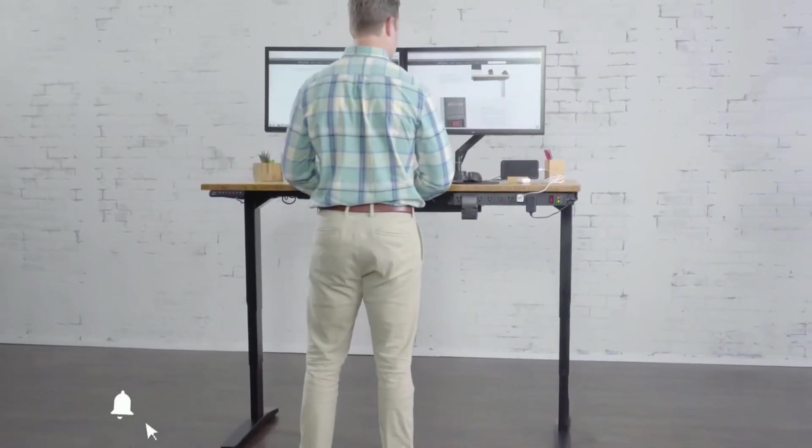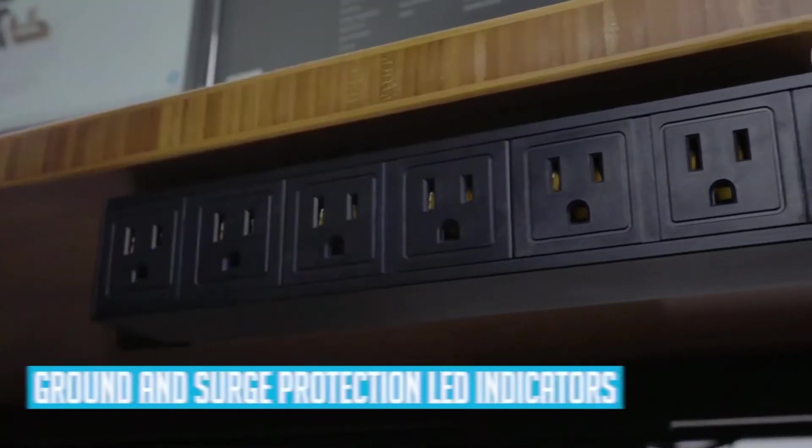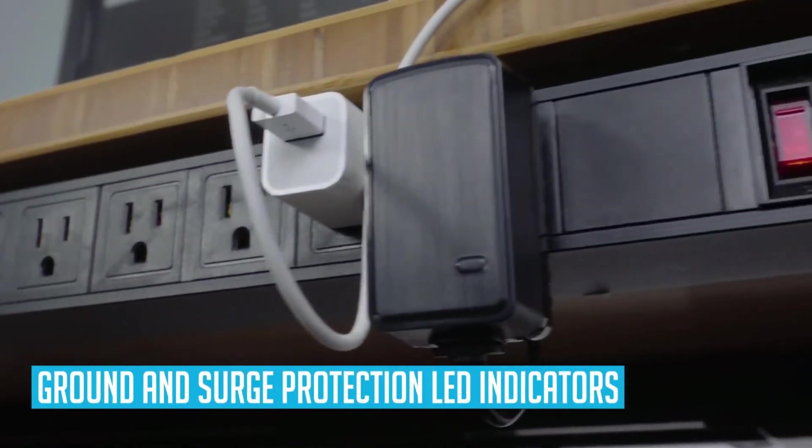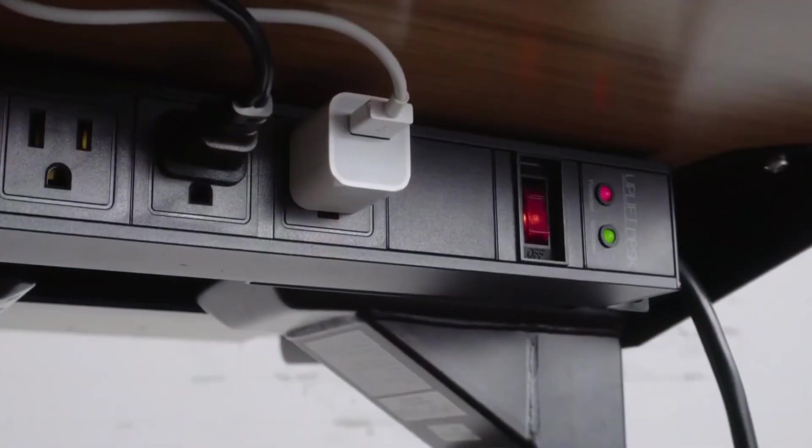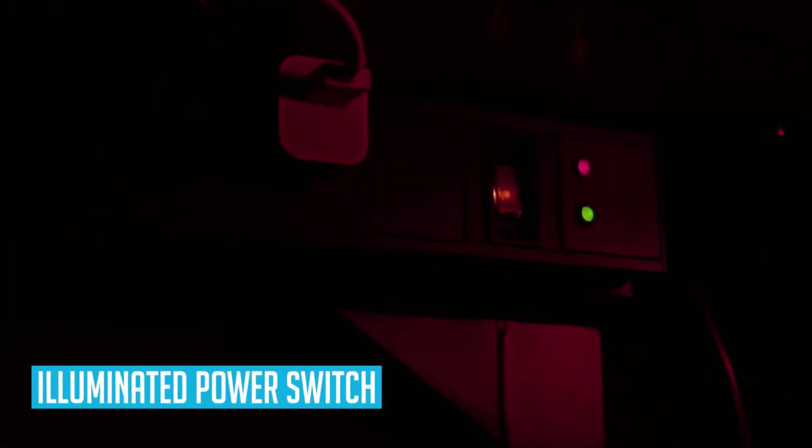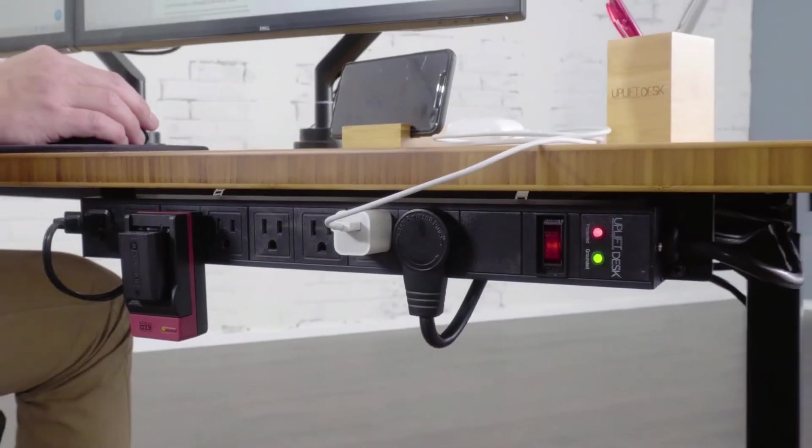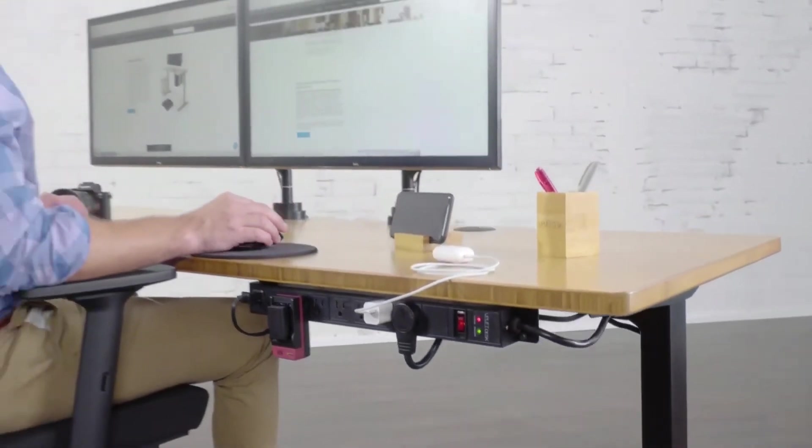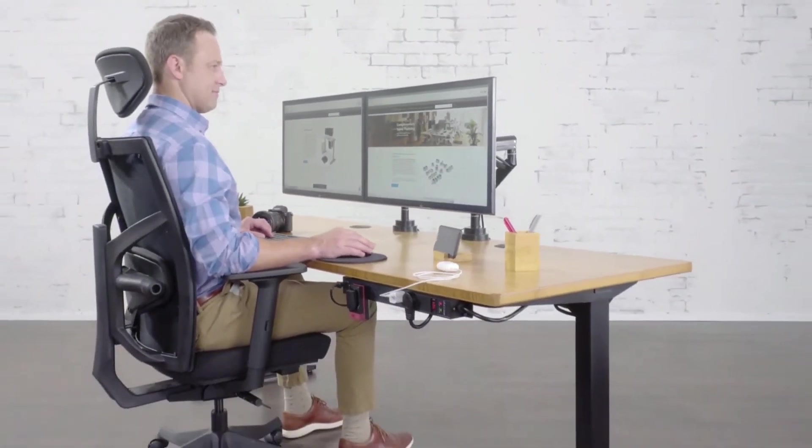Rest assured knowing that your important electronic devices are protected with LED indicators for ground reference and surge protection. An illuminated power switch helps you find your surge protector easily under your desk. Get electrical power and protection to your desk without the mess with the 8 Outlet Surge Protector by Uplift Desk.